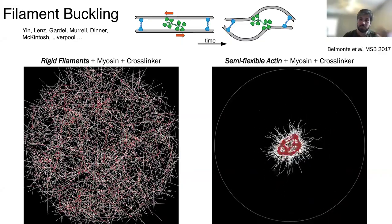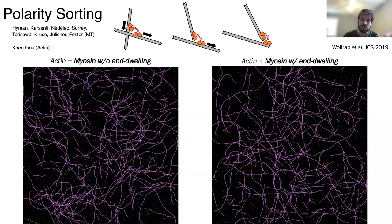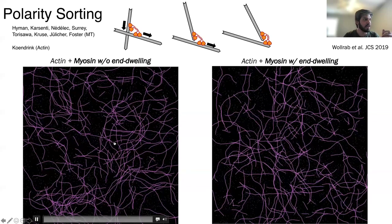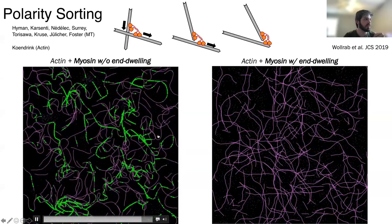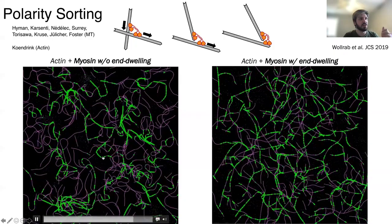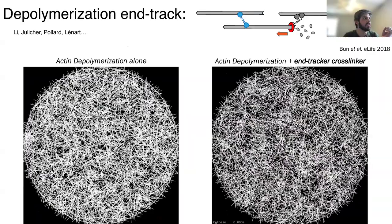The second mechanism by which a cytoskeleton system can contract is called the polar sorting mechanism, where you don't need cross-linker elements. A property of the motor allows it to walk on two or more filaments, and once it reaches the end of the filament, instead of falling off, it stays at the end, helping to bring the two ends of filaments together, sorting them to form an aster. If you don't have this end-dwelling mechanism, motors only walk on filaments with no contraction. But if you turn on the end-dwelling mechanism, the whole system contracts into an aster.